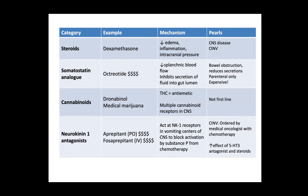Corticosteroids are remarkably effective in the short term. If prognosis is not long it may be a very reasonable thing to try. Somatostatin analog octreotide is hugely expensive — it reduces secretion of fluids into the gut lumen and is sometimes used in bowel obstruction. Cannabinoids — the data don't support first-line use, but some patients swear by it, so worth a try. Neurokinin-1 antagonist aprepitant is very expensive, has to be ordered by an oncologist and approved by a pharmacist, and blocks activation of substance P from chemotherapy.